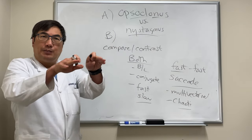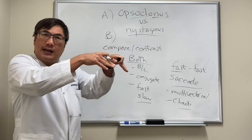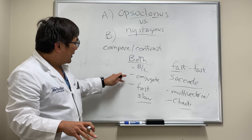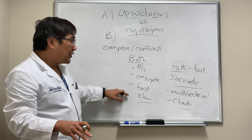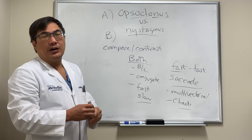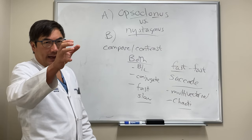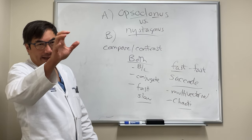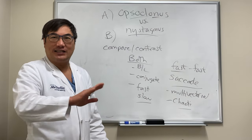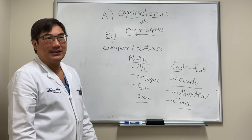So opsoclonus is bilateral, conjugate, multi-directional, saccade-to-saccade-to-saccade, as opposed to nystagmus which is fast and slow or pendular. Nystagmus is also conjugate and bilateral, but normally has a vector and is named for the fast phase — you can have combinations like rotary and downbeat. In opsoclonus it's chaotic, multi-directional, fast-to-fast, with no inter-saccadic interval. That's the difference between opsoclonus and nystagmus.